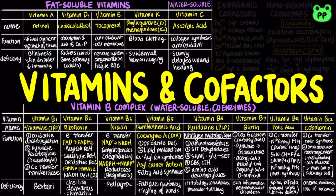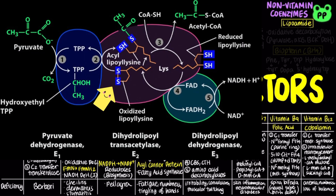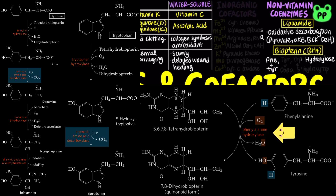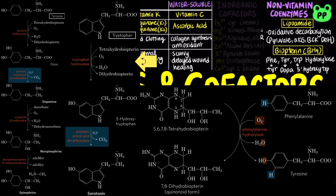Not all coenzymes are from the vitamin B complex. Some non-vitamin coenzymes include lipoamide, which serves as an acyl group carrier during oxidative decarboxylation reactions. Biopterin, or BH4, serves as a coenzyme for amino acid hydroxylases involved in neurotransmitter biosynthesis, including tyrosine from phenylalanine, DOPA from tyrosine, and 5-hydroxytryptophan from tryptophan.